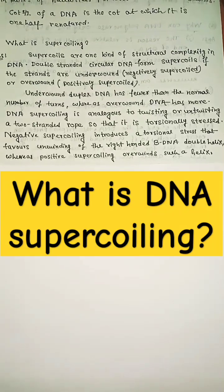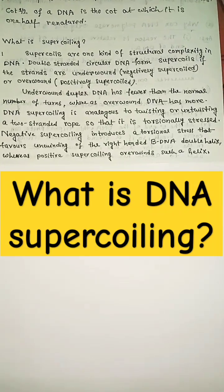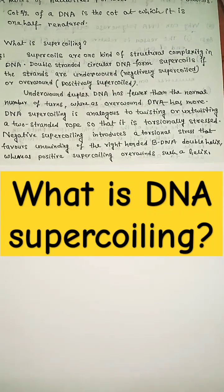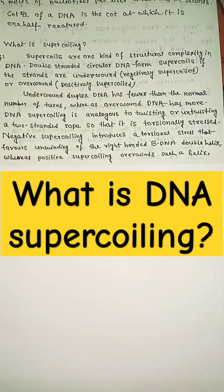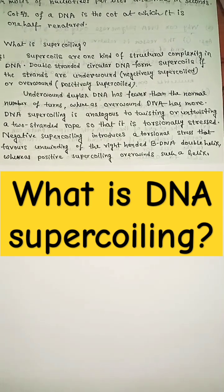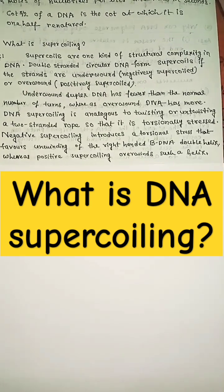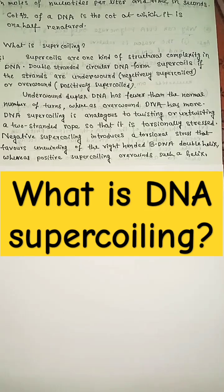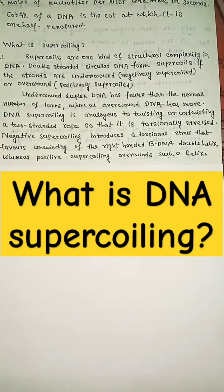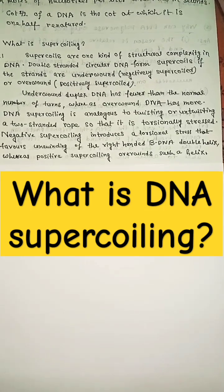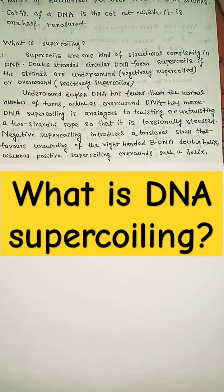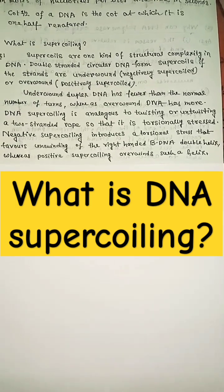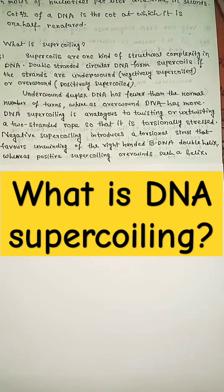What is supercoiling? Supercoils are one kind of structural complexity in DNA. Double-stranded circular DNA forms supercoils if the strands are underwound — that is, negatively supercoiled — or overwound — that is, positively supercoiled. Underwound duplex DNA has fewer than the normal number of turns, whereas overwound DNA has more.